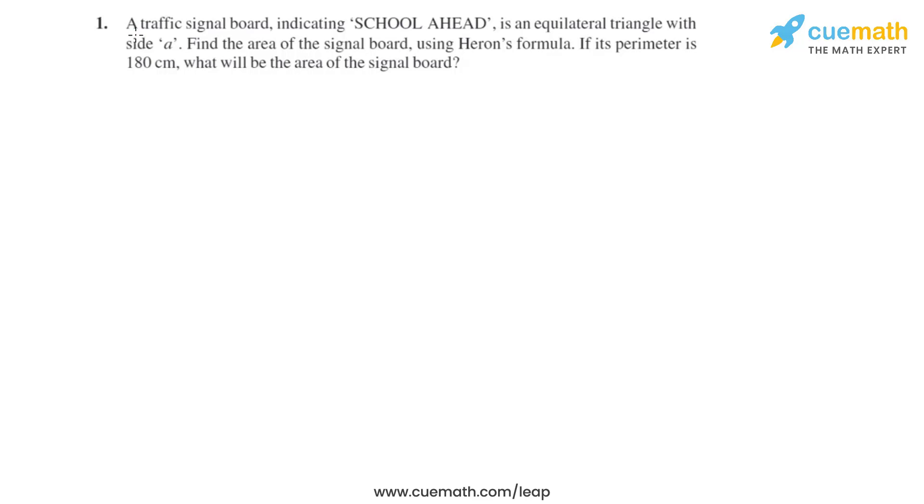Question number one of this exercise says that a traffic signal board indicating school ahead is an equilateral triangle with side A. We have to find the area of the signal board using Heron's formula. Also in the question they have given us that the perimeter is 180 centimeters.